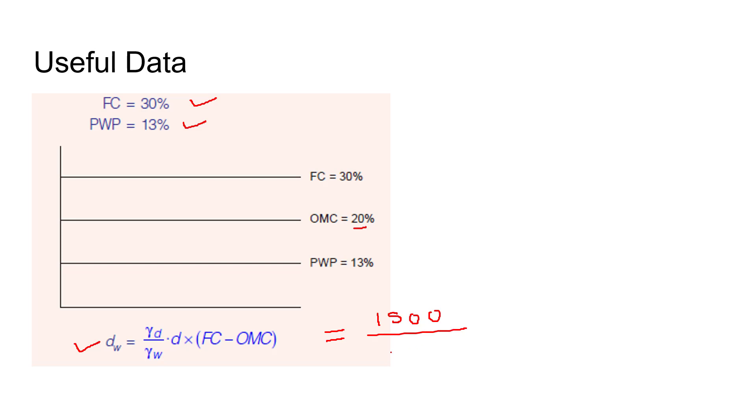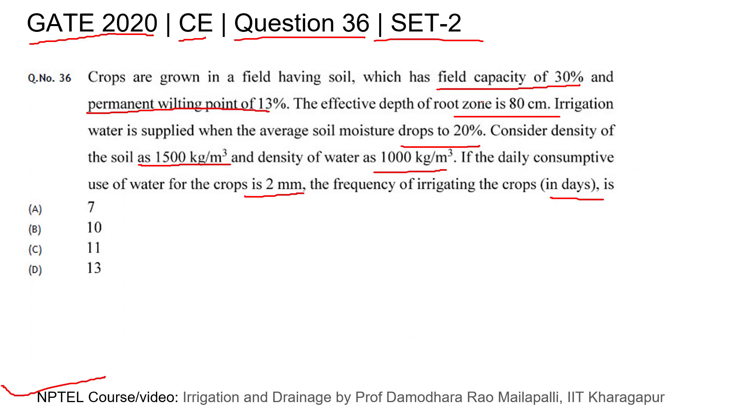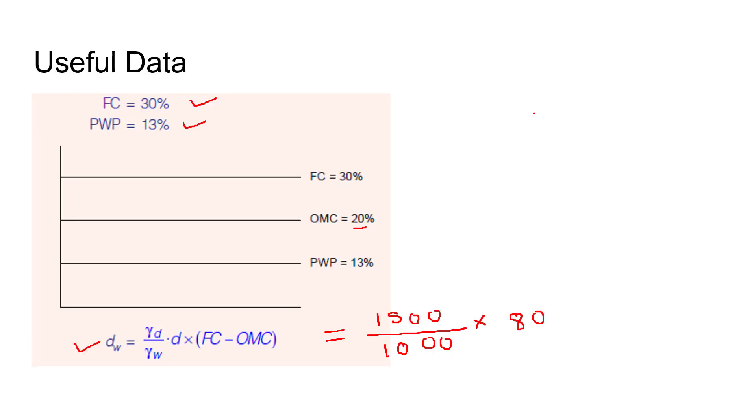They have given density of soil as 1500, density of water 1000, into d which is 80 centimeter depth. This 80 centimeter is the depth of root zone where the roots will go. After that, FC they have given 0.3 minus OMC optimum moisture content as 20, that is 0.2. After solving this, answer will come out to be 12 centimeter or 120 mm.